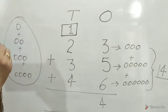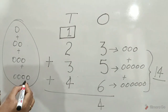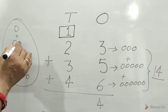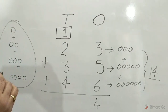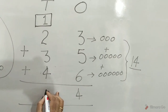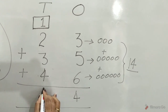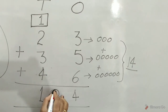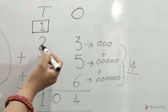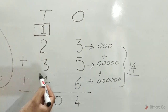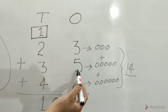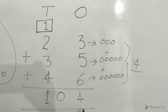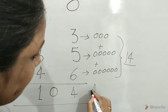Count: 1, 2, 3, 4, 5, 6, 7, 8, 9, 10. Children, 10 tens means 100. So we write here 10. 23 plus 35 plus 46 is equal to 104. This is the answer.